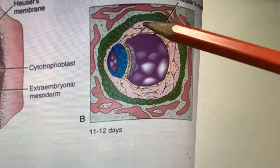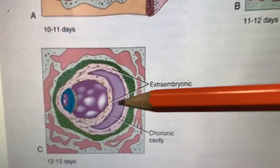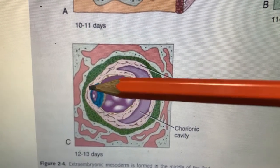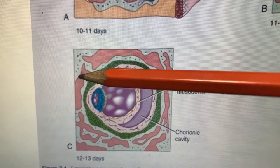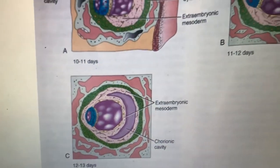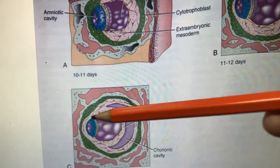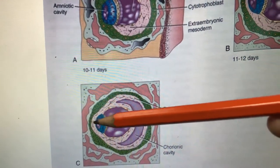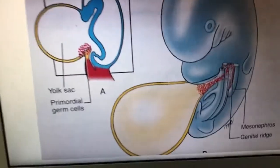The extra-embryonic mesoderm is like a cement-like substance, and suddenly inside the mesoderm a cavity forms — that is called the chorionic cavity. This cavity enlarges and surrounds the entire area except where the embryonic disc is attached to the uterine wall. That attachment area is called the connecting stalk, because it connects. The rest is covered by the chorionic cavity.